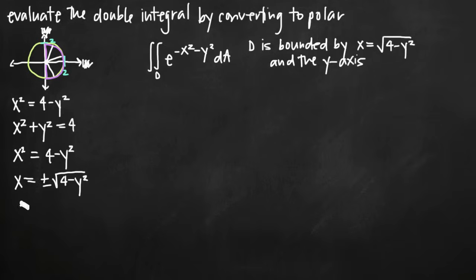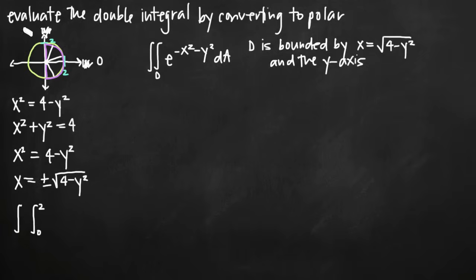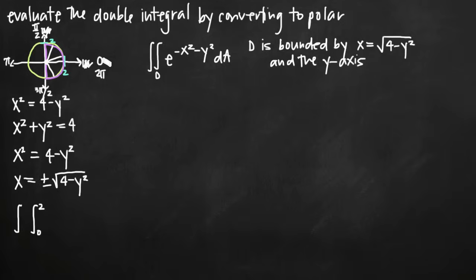So we know our limits of integration for r are going to be 0 to 2, and we can start writing out our double integral. For theta, remember that in a polar coordinate system theta starts at 0 and moves counterclockwise. Up here is pi over 2, this is pi, this is 3pi over 2, all the way back to 2pi. If we were looking for the area of the entire circle — given plus or minus root 4 minus y squared — then our limits of integration for theta would be 0 to 2pi.